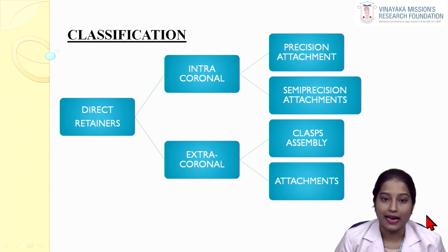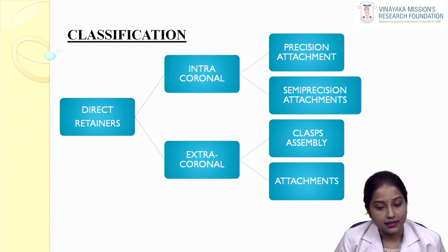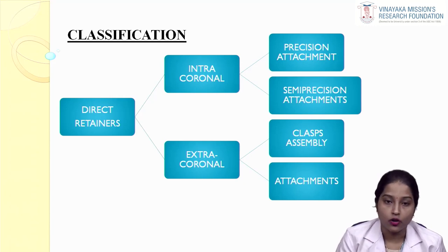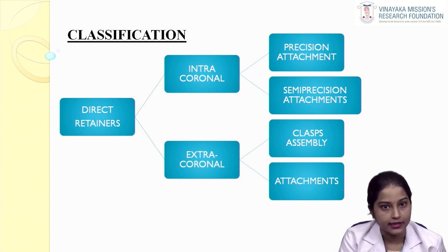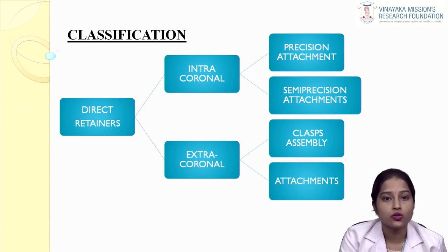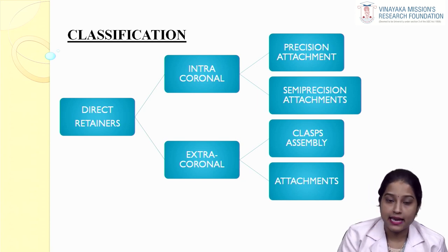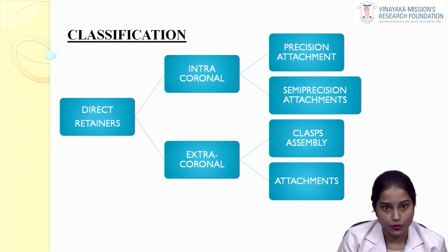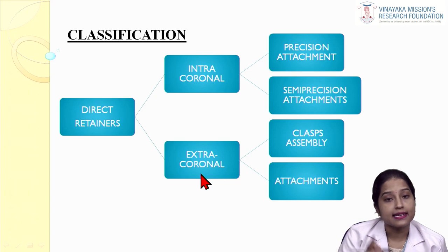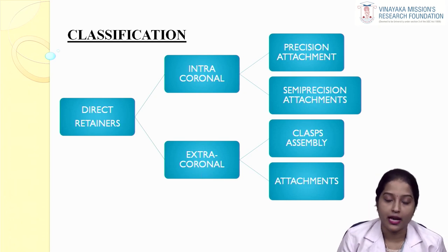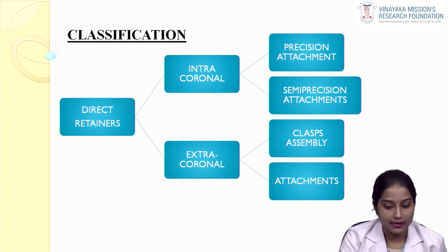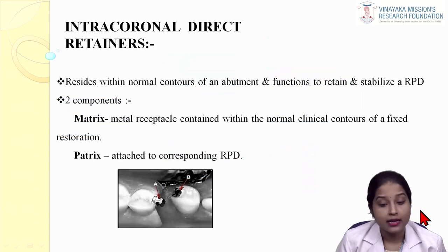Coming to the classification of direct retainers, it can be either an intracoronal direct retainer or an extracoronal direct retainer. As the name indicates, an intracoronal direct retainer resides within the contours of the abutment teeth and can be either a precision attachment or a semi-precision attachment. An extracoronal direct retainer resides outside the contours of the abutment teeth and can be a clasp assembly or an attachment.